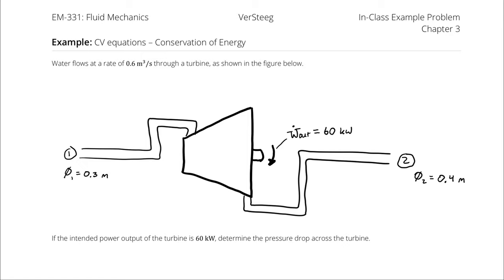Water flows at a rate of 0.6 cubic meters per second through a turbine as shown in the figure below. If the intended power output of the turbine is 60 kilowatts, determine the pressure drop across the turbine.